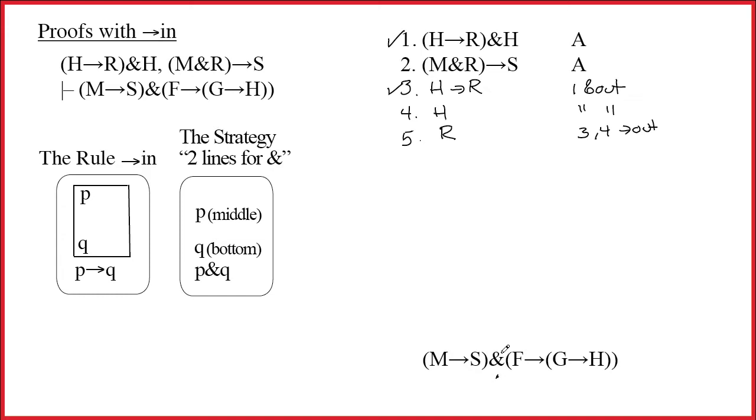Strategies are things that we need to do on a regular basis, and I think it's nice to give them a name so that we can talk about them. When you have an ampersand at the bottom of your proof, that really means that you have two things that you have to prove. We need to prove m arrow s, and we also need to prove f arrow g arrow h. Moreover, what rule do we use to build ampersands, to build conjunctions? Well, of course it's actually the top down rule, ampersand in.